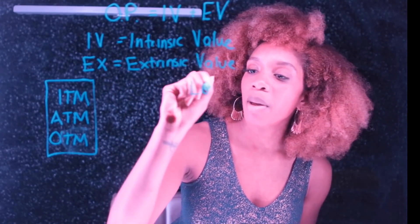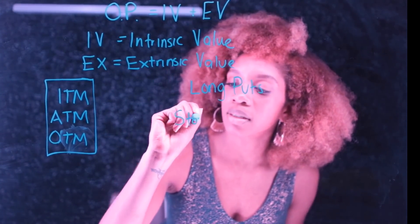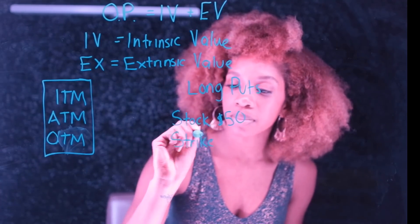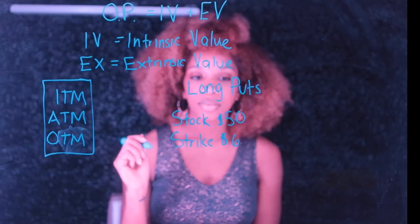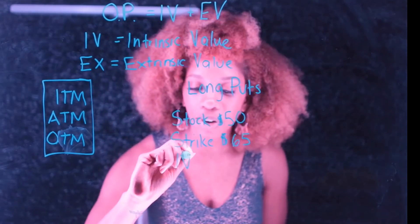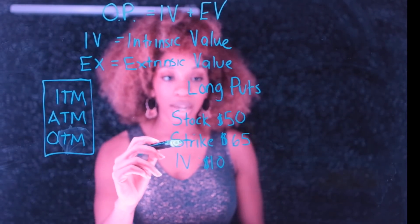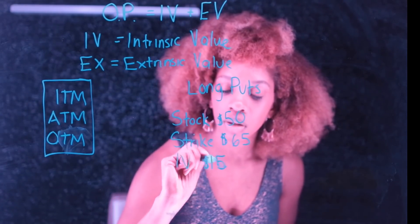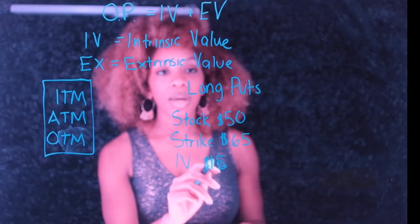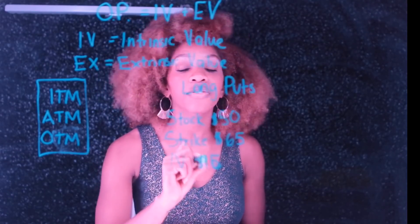Let's say for example I'm doing a long put. Say we have a stock that is trading at $50 right now, and we have our strike price at $65. If the strike is at $65 and the stock is at $50, and this is a long put where I want the underlying to go down, then this contract has at least $15 worth of intrinsic value — because I just subtract the stock from the strike.